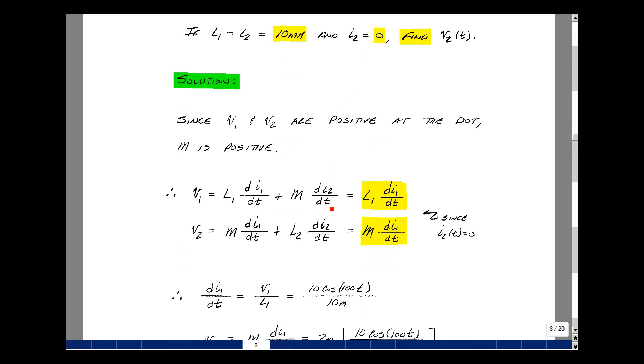Now since I2 is 0, its derivative is also 0, so this term drops out. Likewise, this term drops out. We're left with V1 equals L1 Di1/dt, and V2 equals M times Di1/dt.